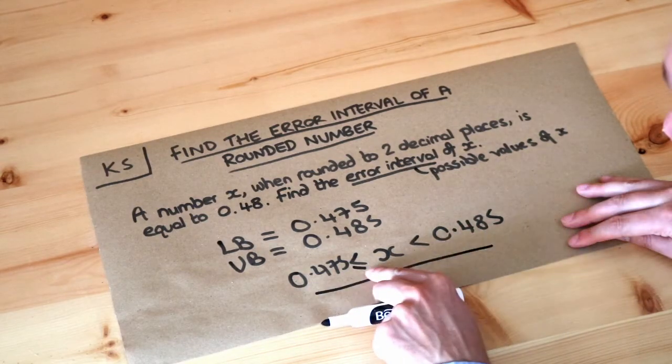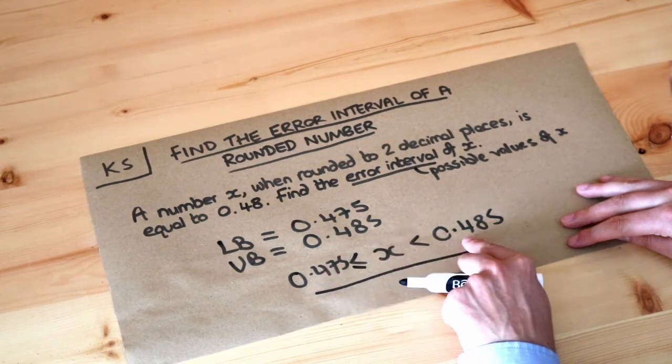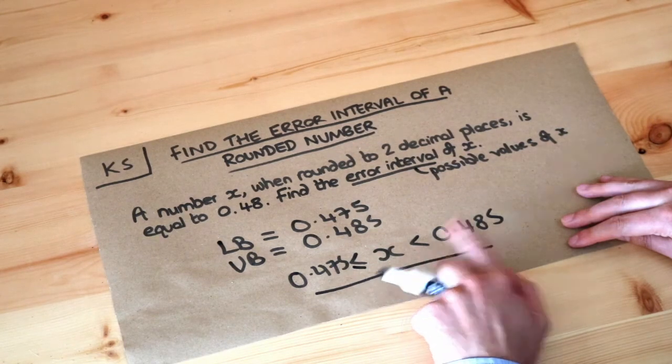So that is the final answer. So x is between your lower bound and upper bound. This should be less or equal to, this should be less than.